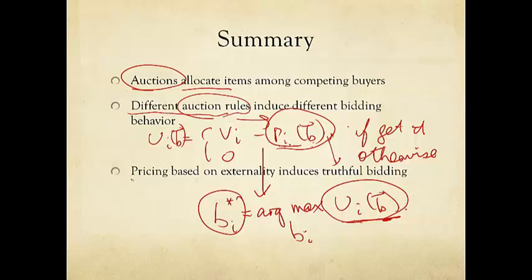In particular, we saw that if you price based on internalizing the negative externality, or in simpler words, if you price based on how much damage one does, for example, second price in single item auction, that would induce a particularly nice, desirable behavior called truthful bidding. Bi star, in that case, equals your true valuation, Vi.